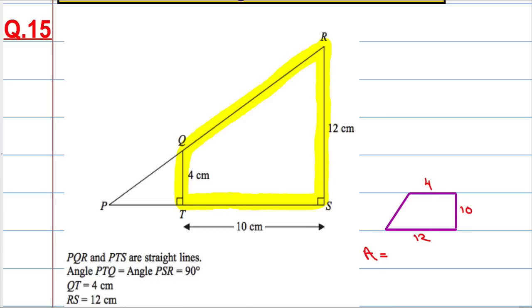And the area for a trapezium is actually given at the front of the book. It's half times A plus B times H. So in other words, add the two parallel sides, multiply by the height and then half your answer.